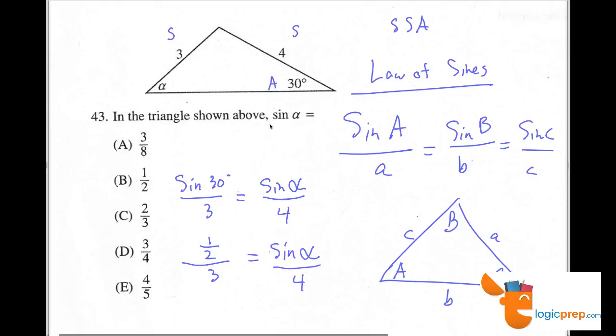The question asks, what is the sine of alpha? So I'll multiply both sides by 4. And on the left, I'll have 4 over 1. So 4 times 1 half is 2, 1 times 3 is 3. Now I have the sine of alpha is equal to 2 thirds.